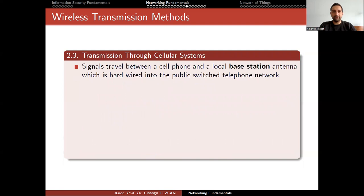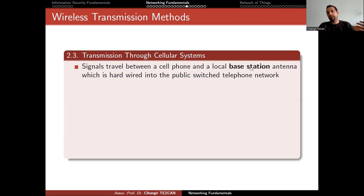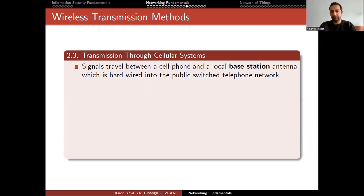The third transmission method is through cellular systems. Signals travel between a cell phone and the local base station antenna, which is hardwired into the public switched telephone network. Almost everyone now has a mobile phone — you are connected to the closest base station, and as you move in a car or on foot, if you get close to another base station, you actually change the base station you are talking to. This can sometimes cause a small disruption in communication, though it is much less noticeable nowadays.